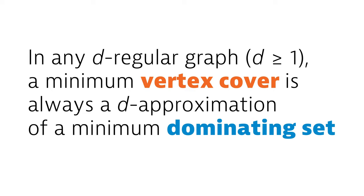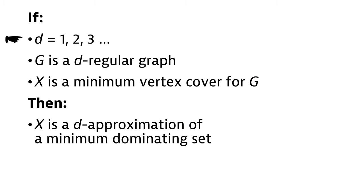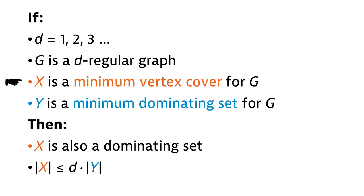Now we understand all terms. Let's rephrase the claim so that it is easier to follow. We can take any positive integer d, and any graph G that is d-regular, and any minimum vertex cover X. The claim is that X is also a d-approximation of a minimum dominating set. To make it more clear: consider any minimum vertex cover X and any minimum dominating set Y — then X is also a dominating set, and its size is not more than d times the size of Y.